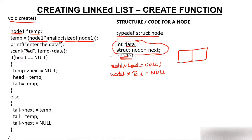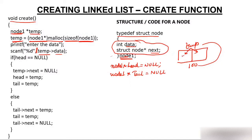Next you are asked to enter the data. Suppose you enter 5. So temp->data will have the value 5. The address part of temp (temp->next) is separate. So 5 will go into the data part of the node.